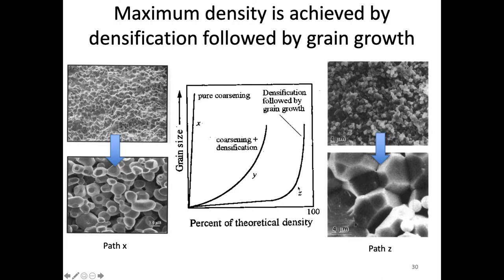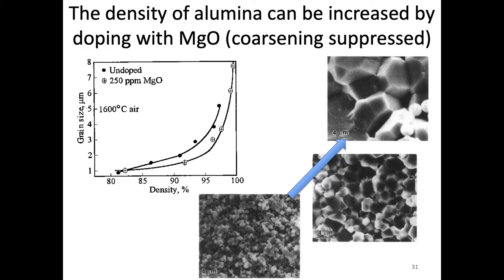In the maximum densification path, those particles are coming together, forming grain boundaries, and eliminating porosity before noticeable grain growth occurs — only at the very end do grains get very large. The important part is densification followed by grain growth. We can also have something in the middle where densification and grain size increase simultaneously. We don't tend to achieve maximum density unless grain growth is suppressed until after densification occurs. Suppressing grain growth to allow densification first is a major focus of the ceramic sintering community.